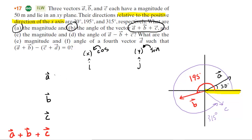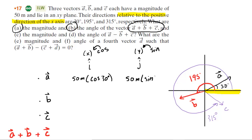What we'll do is take the vectors and organize them into a table. We have vectors A, B, and C, and then in a different color, we have the sum of those three vectors. For vector A, all we need to do is take the magnitude, which is 50 meters, and multiply it by the cosine of the given angle, which was 30 degrees. Then we do the same thing for the y-component, except we change cosine into sine.